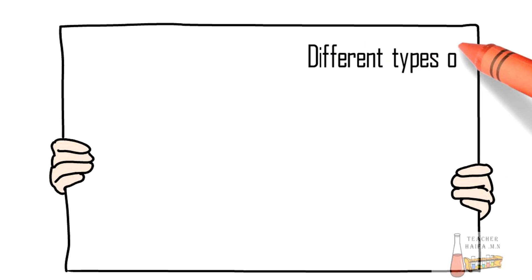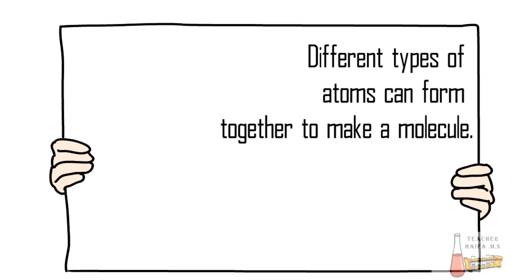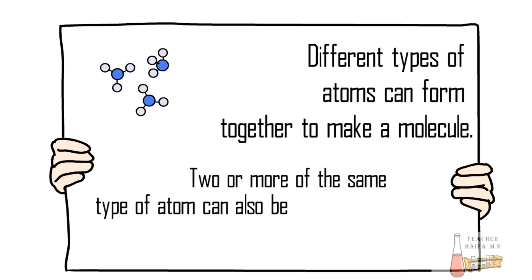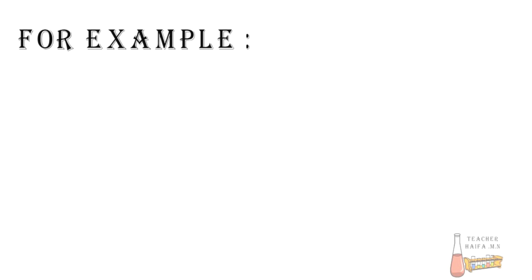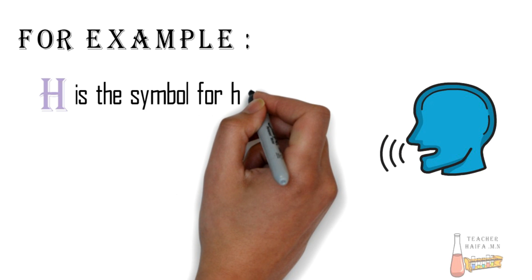Different types of atoms can form together to make a molecule. Two or more of the same type of atom can also be bonded to make a molecule. For example, H is the symbol for hydrogen and O is the symbol for oxygen.